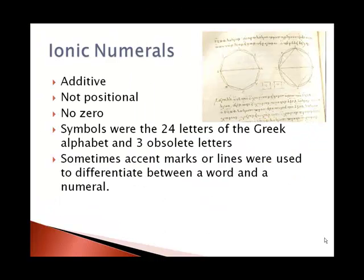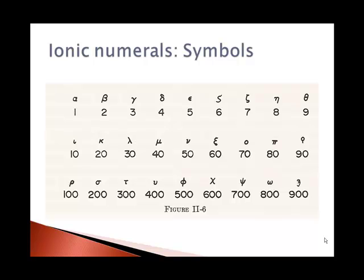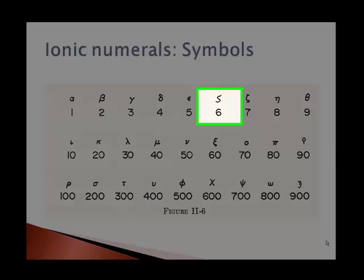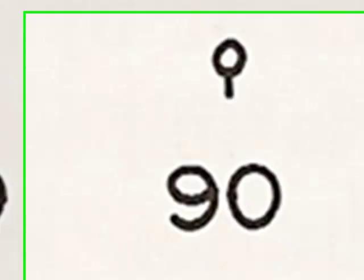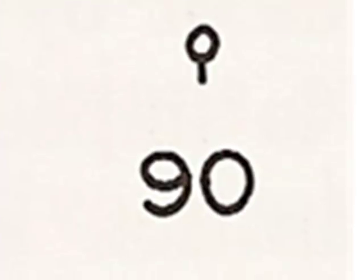And here is an excerpt from your book showing those 27 Greek letters. There are some obsolete characters, the 6, 90, and 900.